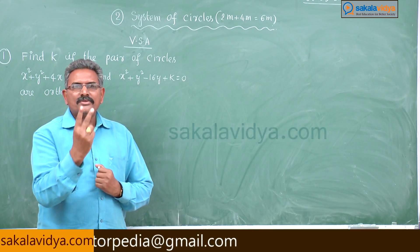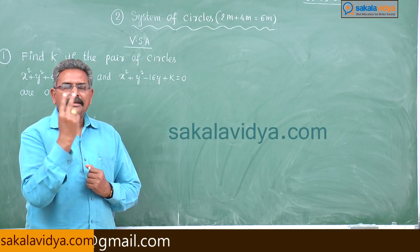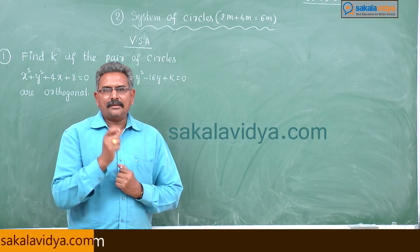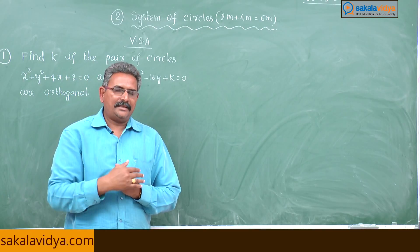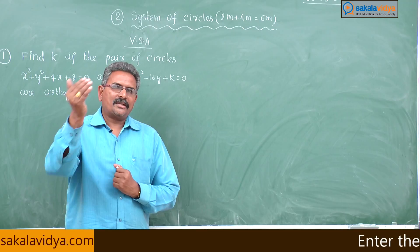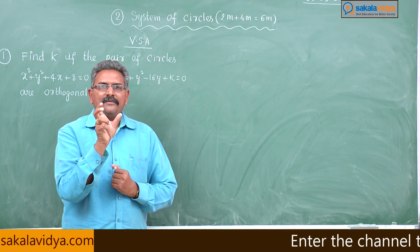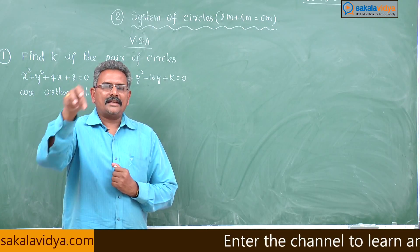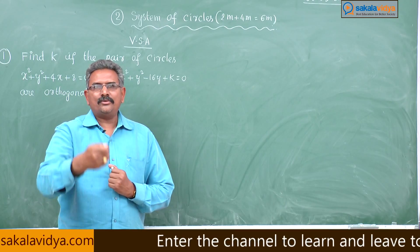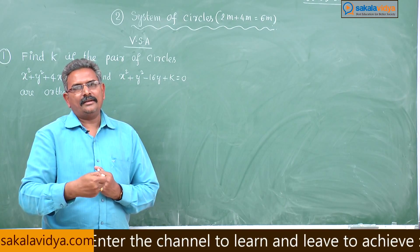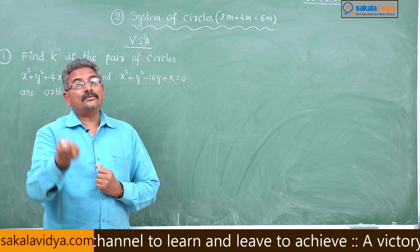If the two circles cut orthogonally, that means the angle between the two circles is 90 degrees, then they are said to be orthogonal to each other or they cut orthogonally.